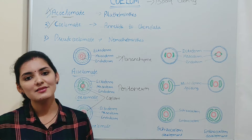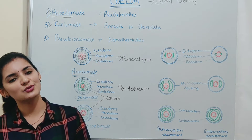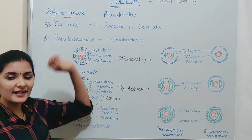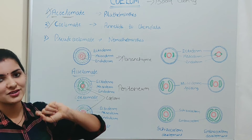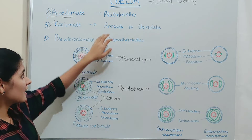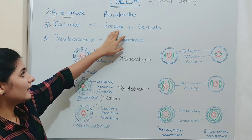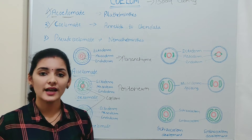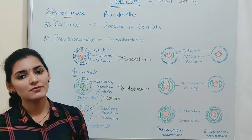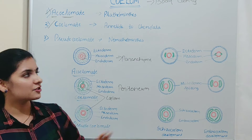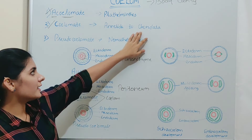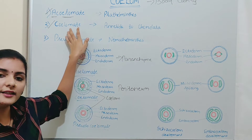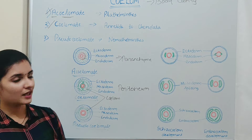Organisms which possess this true coelom are known as Coelomates. Examples of Coelomates range from Phylum Annelida to Phylum Chordata. So all organisms from Phylum Annelida to Chordata are Coelomates, meaning they possess a true coelom.